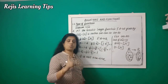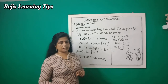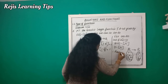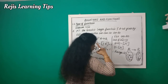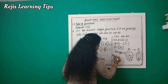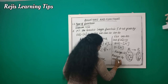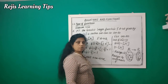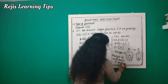The range of the greatest integer function is the set of integers Z, but the codomain is R. Since range is not equal to codomain, we can say that function f is not onto.